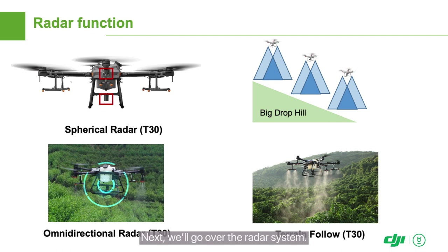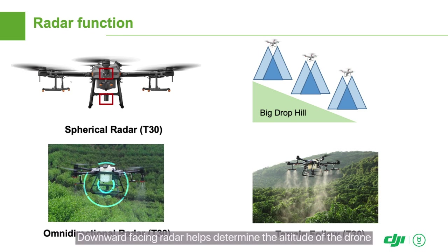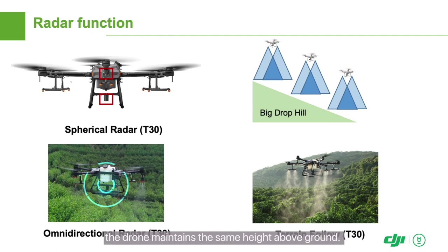The Agris drone uses radar to sense its surrounding environment in real-time, enabling forward and backward obstacle perception and avoidance. Downward-facing radar helps determine the altitude of the drone for auxiliary height determination. It also enables terrain-adaptive flight, so even if the terrain changes, the drone maintains the same height above ground.